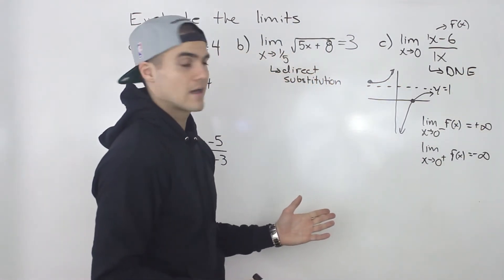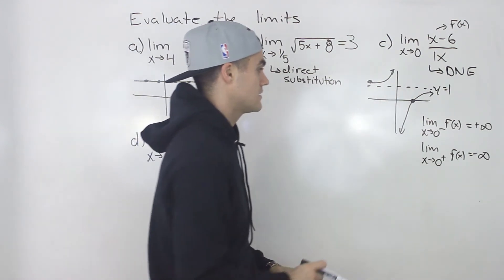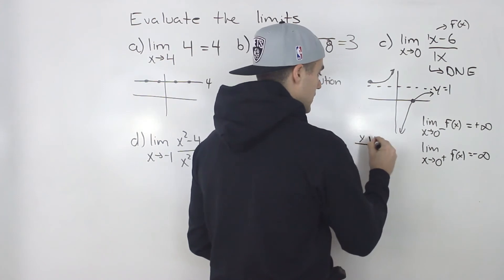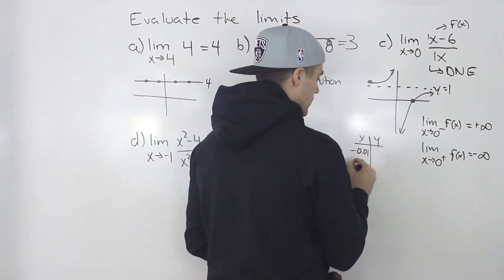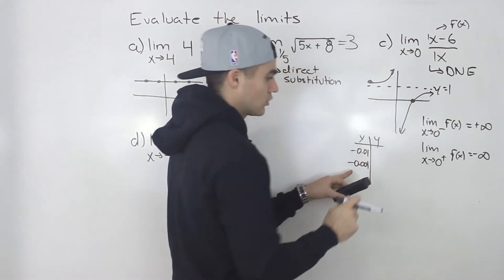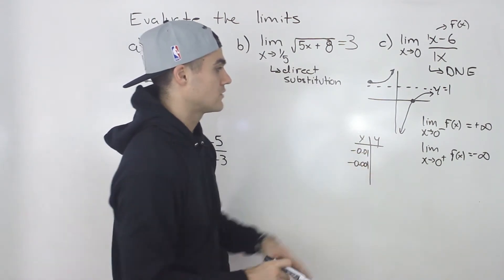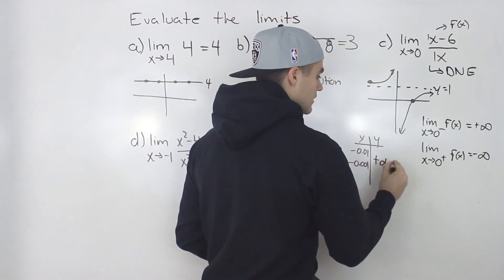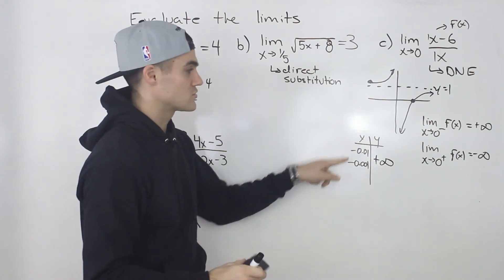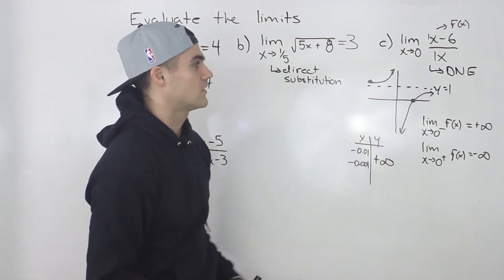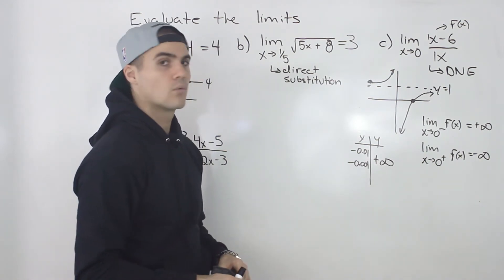You could also confirm this with a table of values. Approaching x = 0 from the left by picking numbers like −0.01, −0.001 — getting closer and closer from the negative side — you'd see the y values approach positive infinity. From the positive side, using 0.1, 0.01, 0.001, the y values approach negative infinity. So the limit doesn't exist because we're approaching different y values.